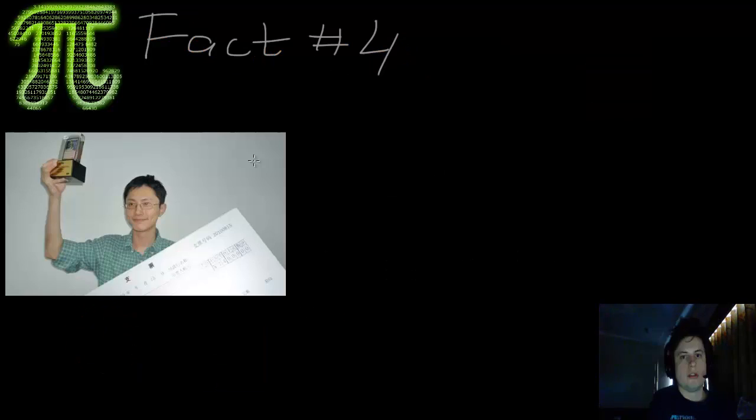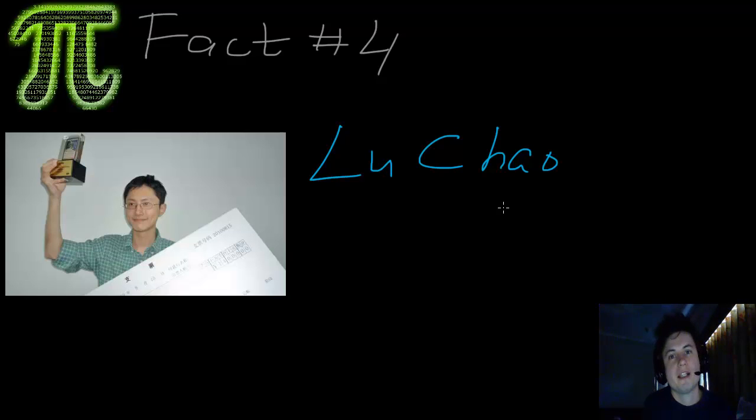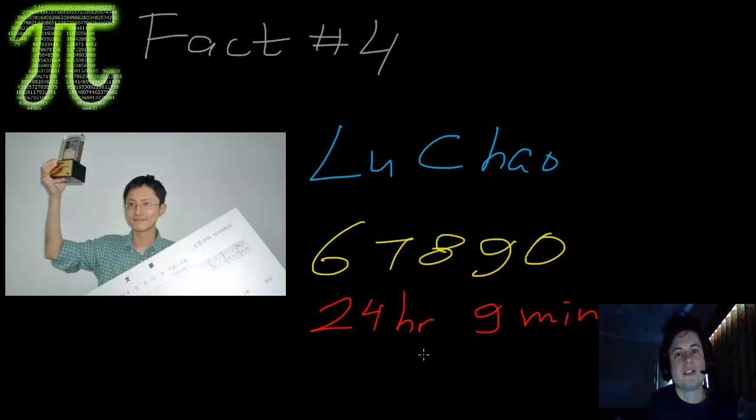Fact number four. His name is Lu Chao, he's from China. Today we have an obsession with memorizing as many numbers of Pi as possible and then reciting them in front of people. This guy tried to recite 100,000 numbers of Pi on stage, but unfortunately he made a mistake. He was only able to get 67,890 numbers right. That's today's record. Can you guess how long it took him to recite these numbers on stage? 24 hours and 9 minutes. That's a hobby you may want to avoid mentioning on your resume.